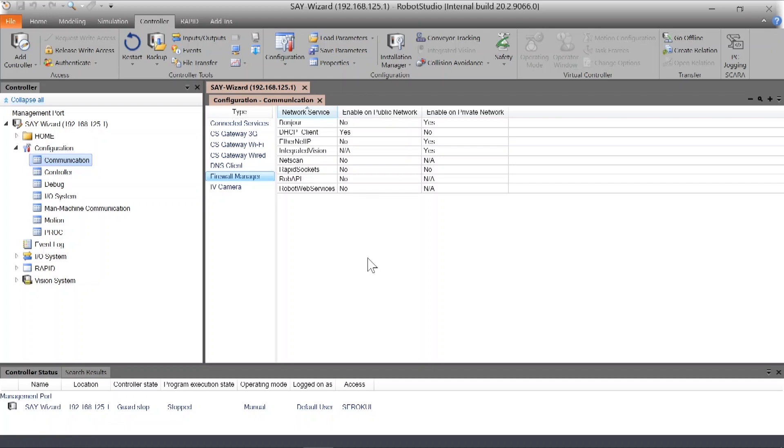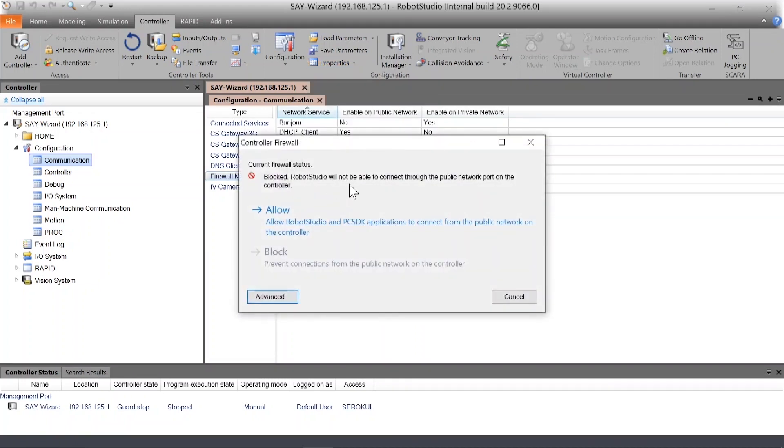You can also change this setting from properties in Robot Studio. To scroll down, you see configure firewall and here you see the same setting. Again, click allow to allow Robot Studio to communicate over the public network to the controller.